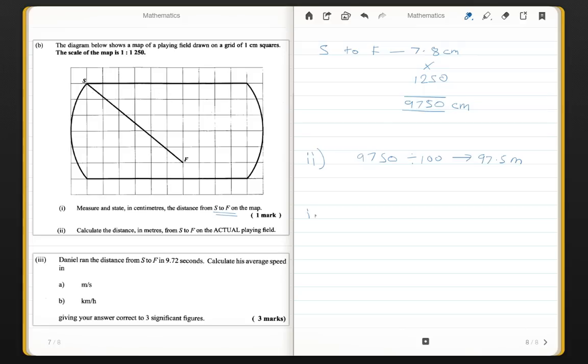Moving on to part 3. Danielle ran from S to F in 9.72 seconds. Calculate her average speed in meters per second. Average speed, even if you never did physics, you should remember that speed is equal to distance divided by the time you take. So, in her case, she ran 97.5 meters and it took her 9.72 seconds. Using your calculator, this would give you approximately 1.00 meters per second.